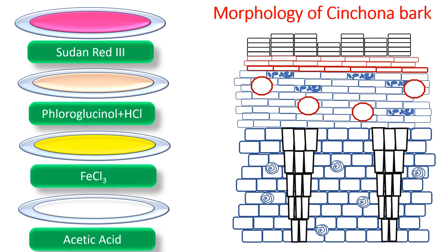The next stain is chloroglucinal HCl, which specifically binds with lignified tissue. In the entire section, only the phloem fibers in the secondary phloem are lignified, so they stain pinkish or reddish. Then, the tannin ducts or polyphenolic secretions of the secretory cells present in the cortex region can be stained with FeCl3, which should be freshly prepared. The secretory cells take up a bluish-black color, indicating the presence of tannins or polyphenols.